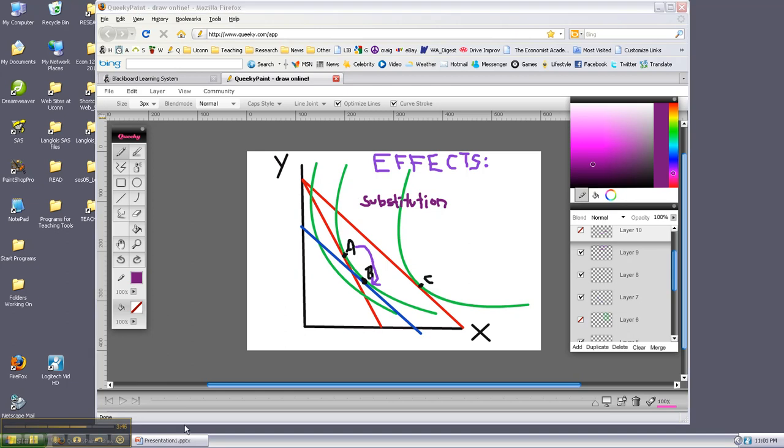And finally the income effect, which will be moving back to point C. So we've increased real income. Relative prices are constant. And that's our total move, decomposed into the substitution effect and the income effect.